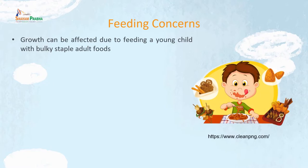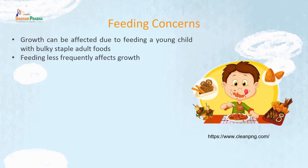Routine home-based diets are adequate for growth and development of the child if they are calorie-dense and given in small feeds frequently. However, even with enough food available, growth can be faltered if the child is fed bulky staple foods that fill the tiny stomach but kill hunger without meeting energy needs, or if the child's small stomach is fed infrequently.